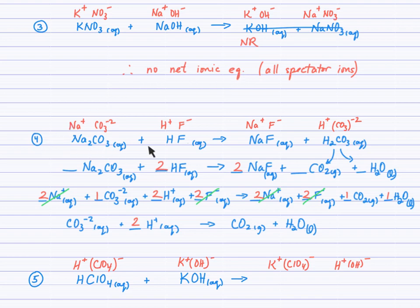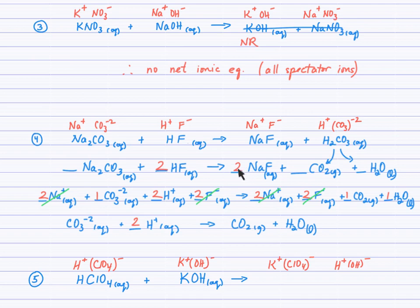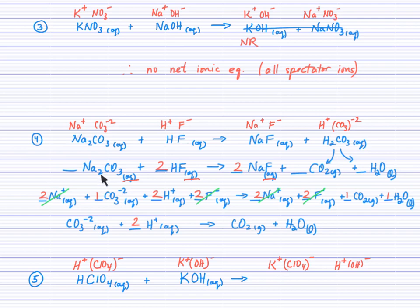For number 4: sodium carbonate plus hydrofluoric acid undergo double displacement. One product is carbonic acid — but remember, carbonic acid decomposes to CO₂ gas and water. Check your double displacement and decomposition lessons to verify this. After balancing, there's a coefficient of 2 in front of HF and NaF. I write symbol, charge, AQ for every aqueous substance: sodium carbonate, hydrofluoric acid, and sodium fluoride. The CO₂ gas and liquid water stay the same. Balancing gives 2 sodium, 1 carbonate, 2 H's, 2 F's, and so on.